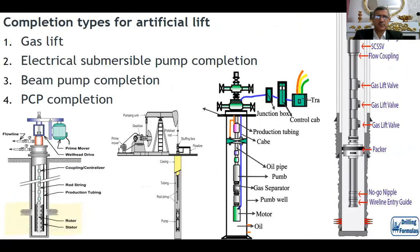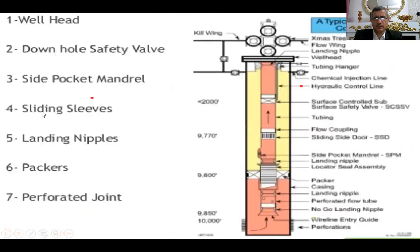Completion types depend on the production and what we produce from the well. We have gas lift well, ESP (electric submersible pump), beam pump, and PCP. And this is the typical completion that is run in the well — a tubing completion — from surface down to the wireline entry guide. We can take them one by one in detail.